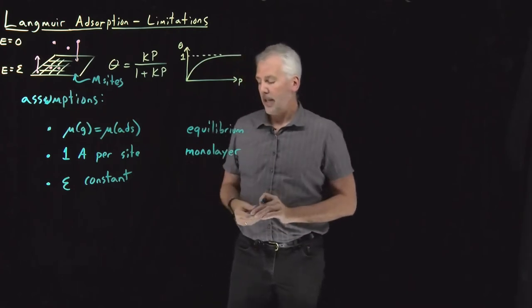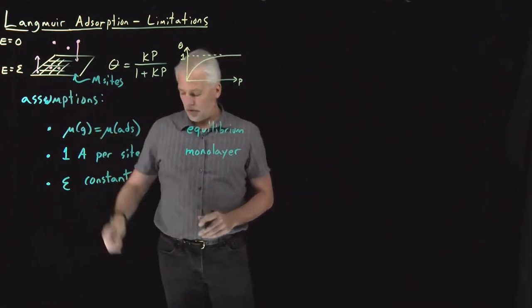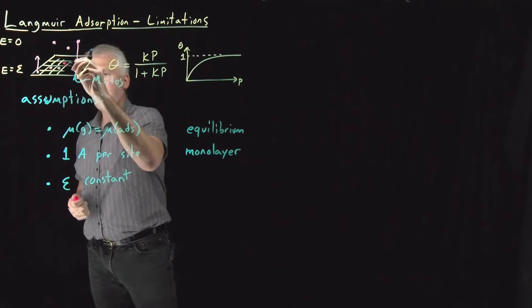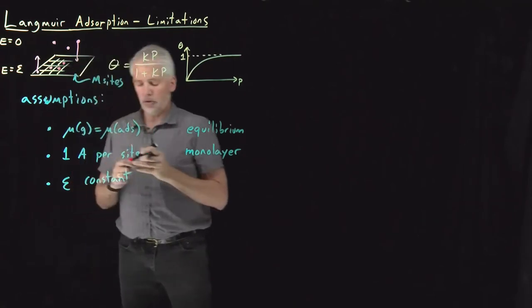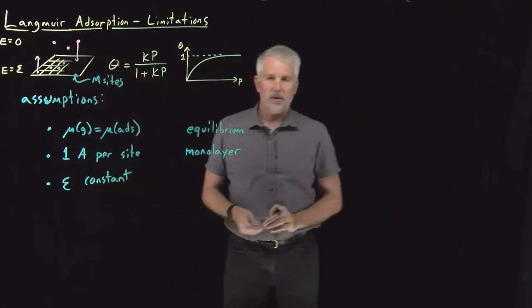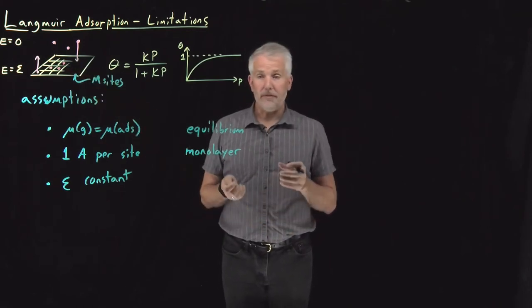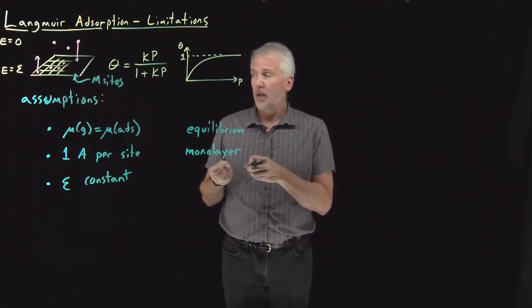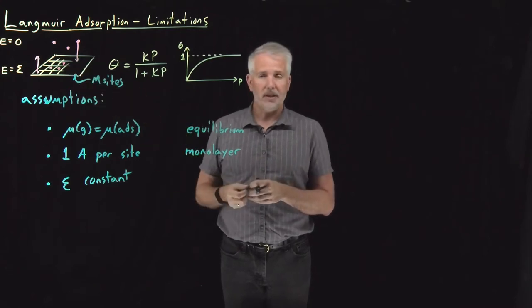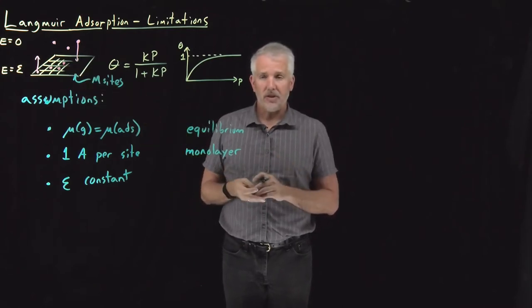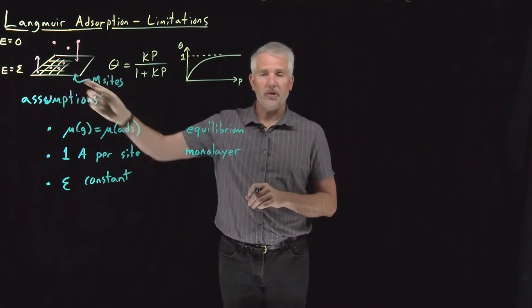Meaning that if I adsorb a molecule, another one of these pink molecules, next to an existing molecule, it only interacts with the surface. And the fact that it's next to another pink molecule, it doesn't have any favorable interactions from being close to another molecule of the same species. It doesn't have any steric interactions or repulsive interactions with another molecule of the same species.